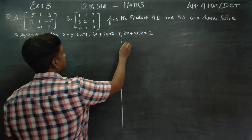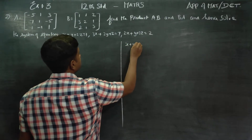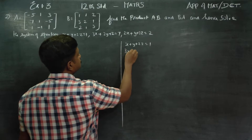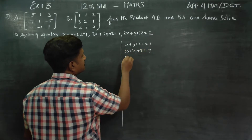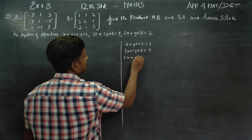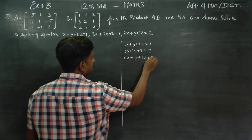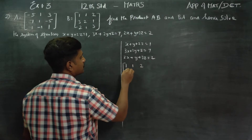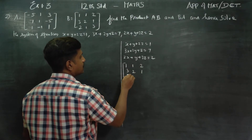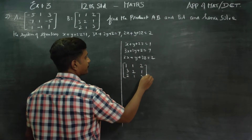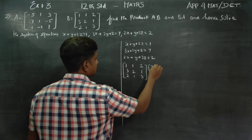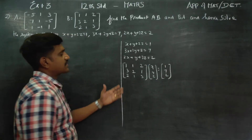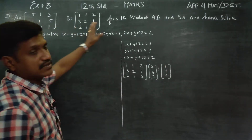First, the system of equations: x plus y plus 2z is equal to 1, 3x plus 2y plus z is equal to 7, 2x plus y plus 3z is equal to 2. This can be written in matrix style as [1,1,2; 3,2,1; 2,1,3] into [x,y,z] is equal to [1,7,2].